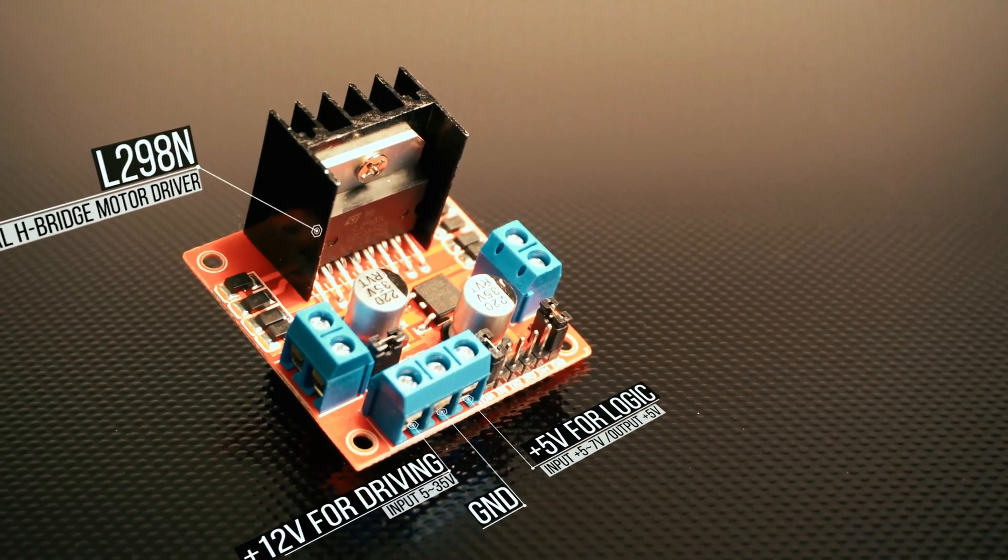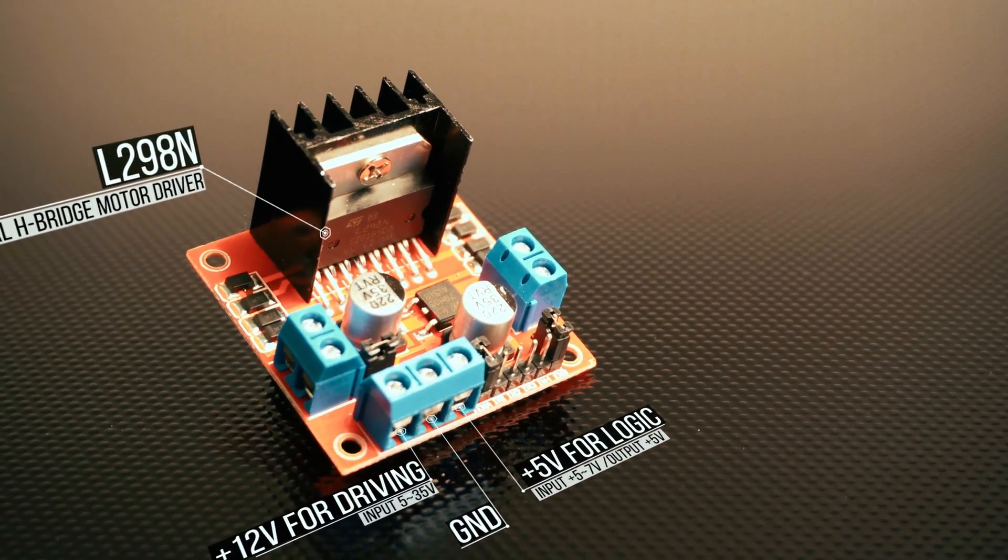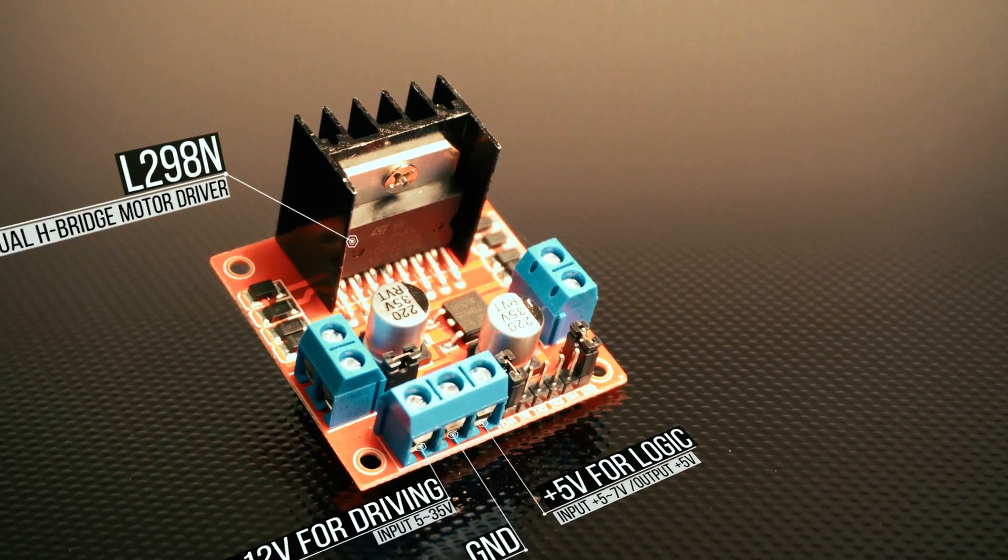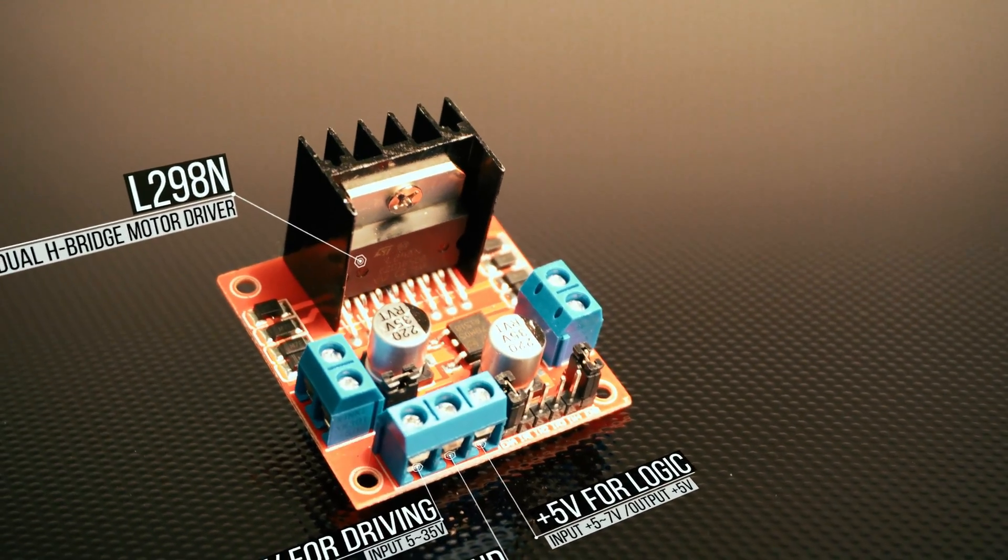Think of it as a faucet with a two-directional valve. The 12V terminals are the water running through the pipe, and the 5V is like the force controlling the valve.